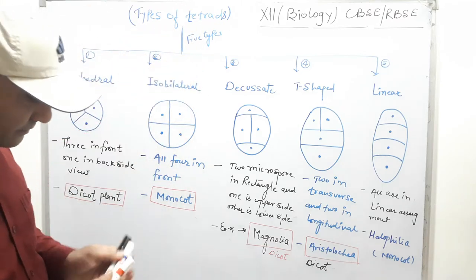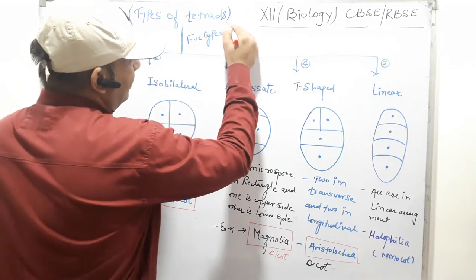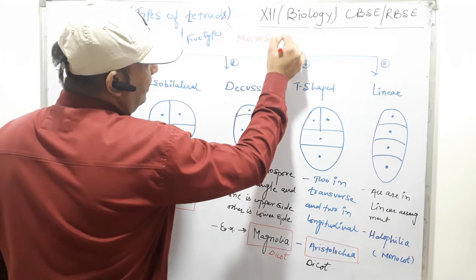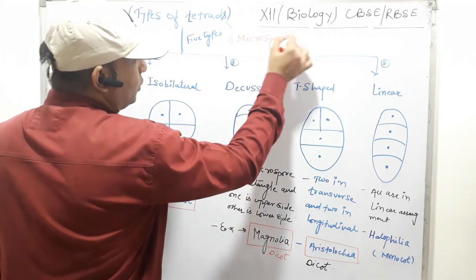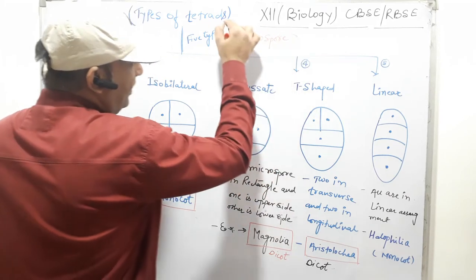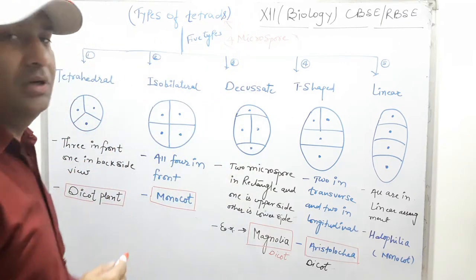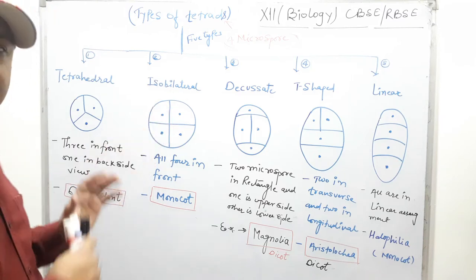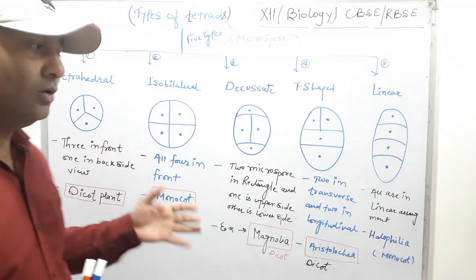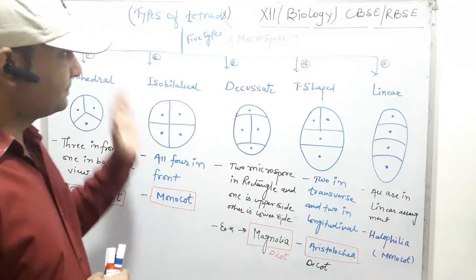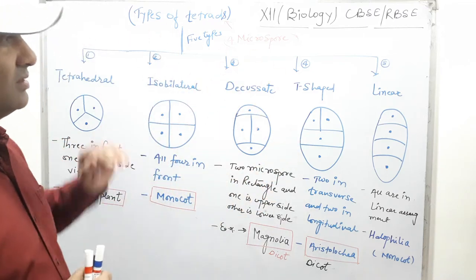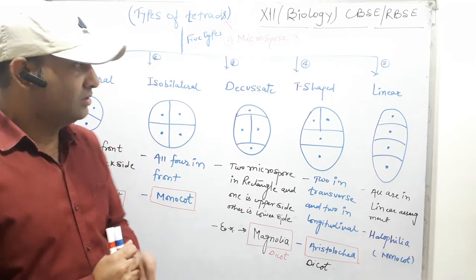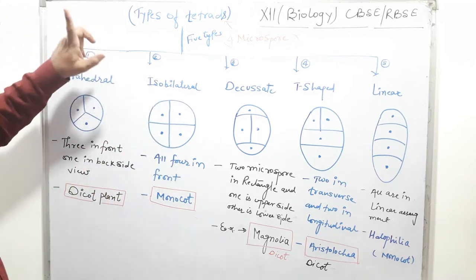Tetrad means four microspores in joined form — it is called a tetrad. Different tetrads are present among different plants, especially monocot, dicot and some others. Today we will discuss about these topics. So first, the types of tetrads.